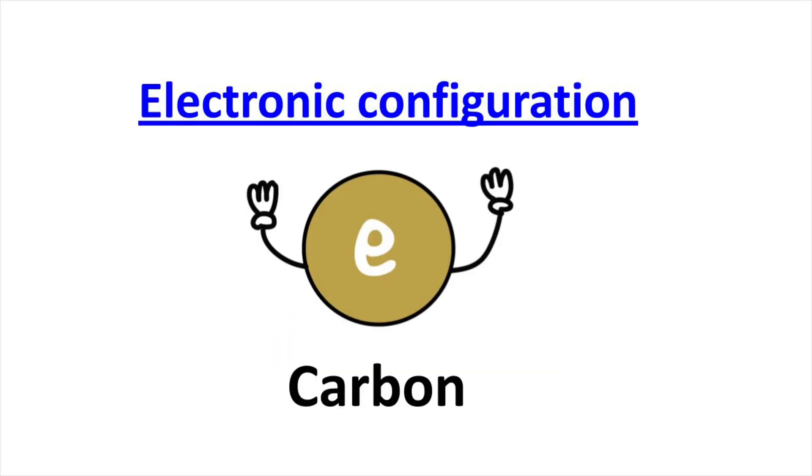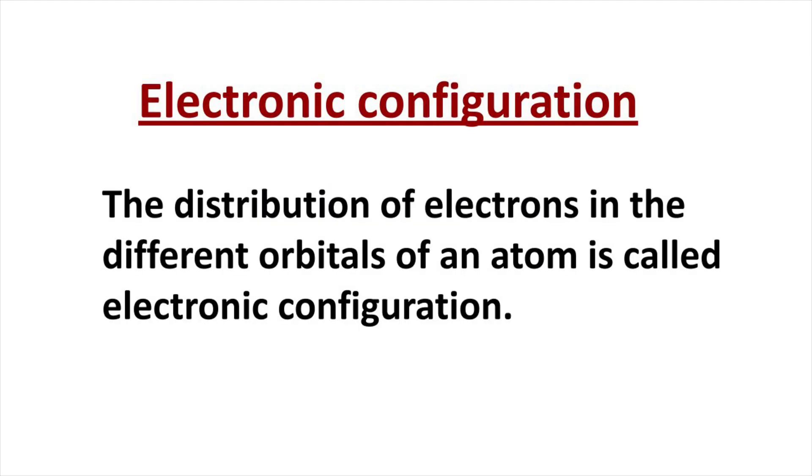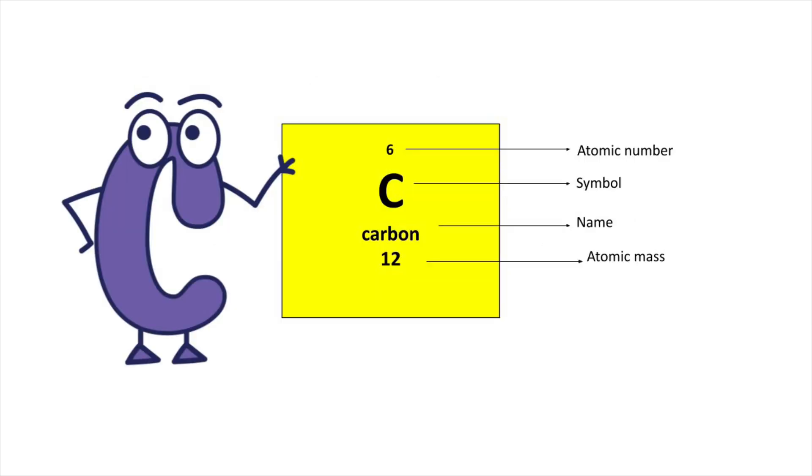Welcome to Aurora Chemistry for everyone. The distribution of electrons in the orbital of an atom is called electronic configuration. To write electronic configuration we should know the atomic number.